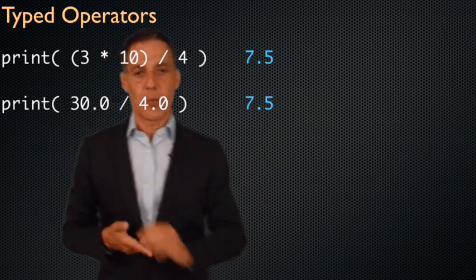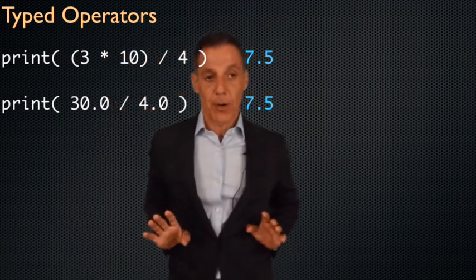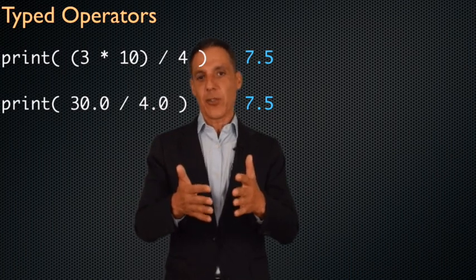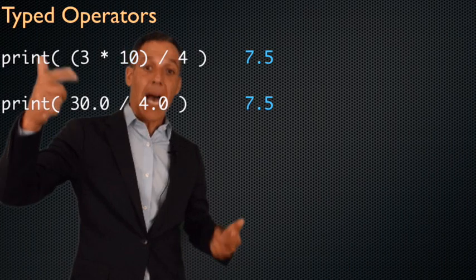Simply by putting a decimal point there, you are forcing them to be treated as floating points. In this case, it doesn't matter, because Python's doing the right thing for you. I think, however, in the same way that you should put parentheses in order to group things, you should be very careful to make sure you understand that that's a floating point operator.